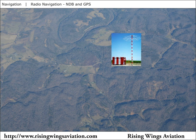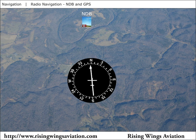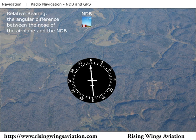The ADF needle points directly towards the NDB, displaying the bearing relative to the nose of the airplane. This relative bearing is simply the angular difference between the nose of the airplane and the station's location. Turning the airplane until the needle is pointing directly ahead results in the airplane being pointed directly at the station.